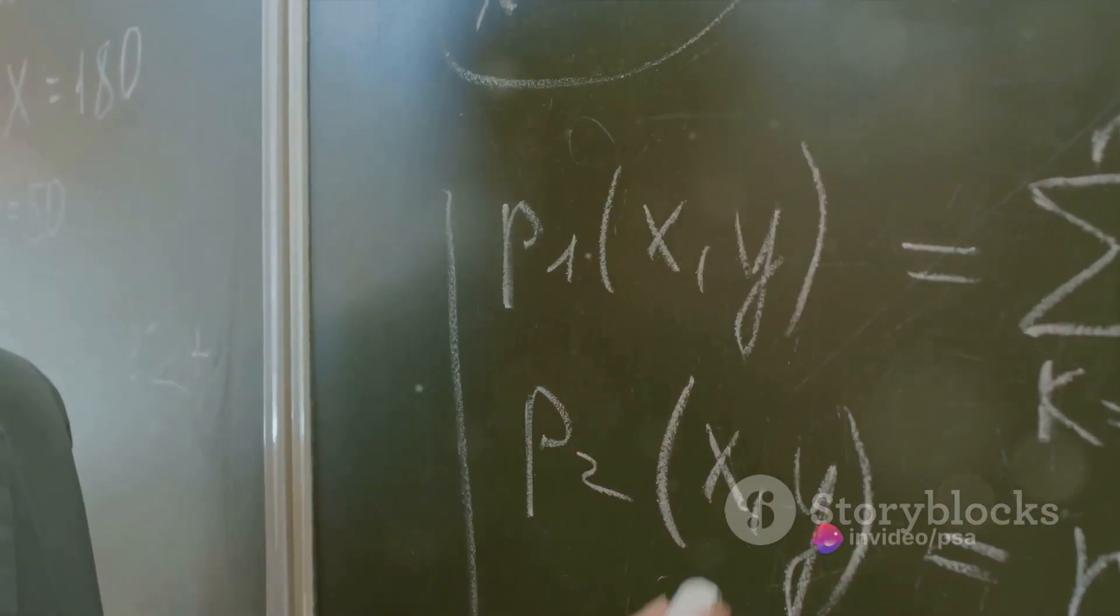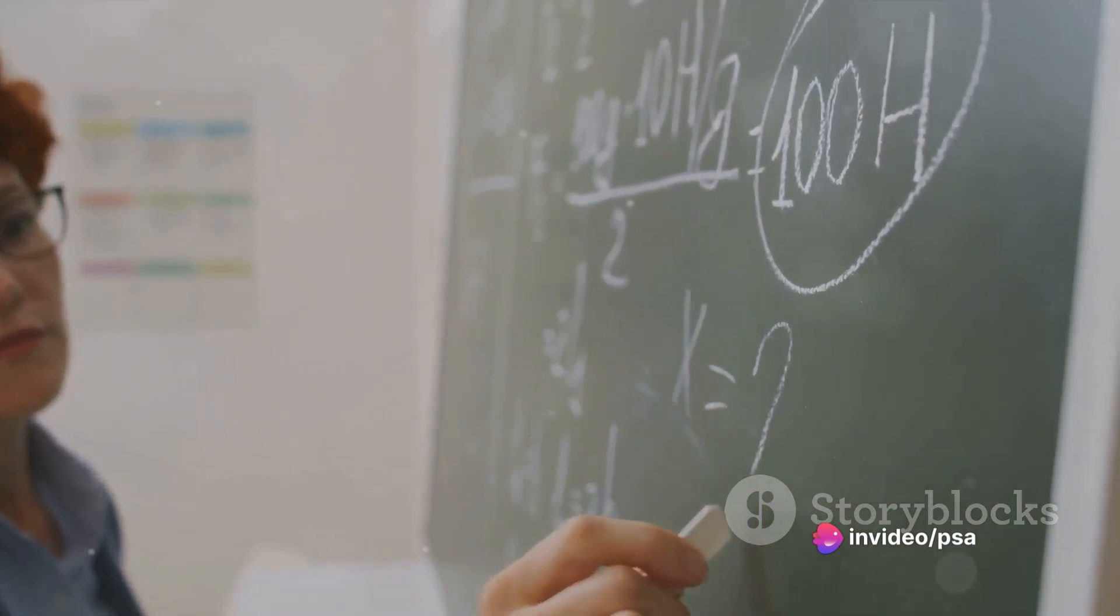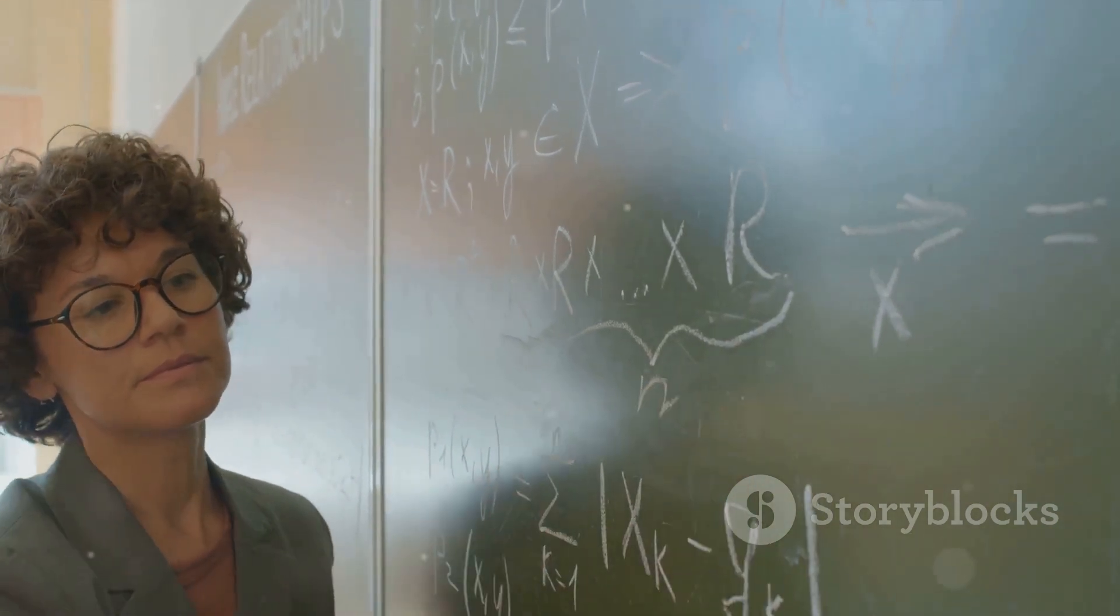The reciprocal identities, for example, tell us that the cosecant is the reciprocal of the sine, the secant is the reciprocal of the cosine, and the cotangent is the reciprocal of the tangent.